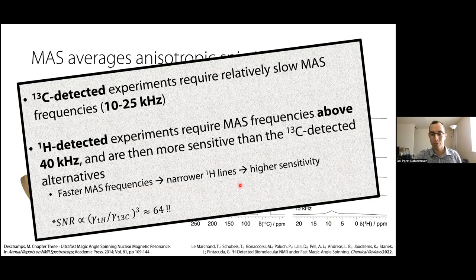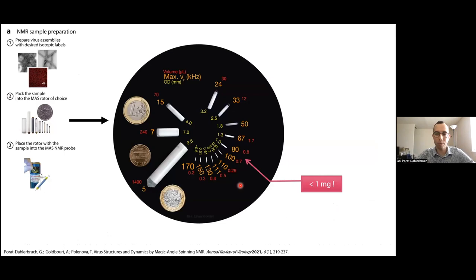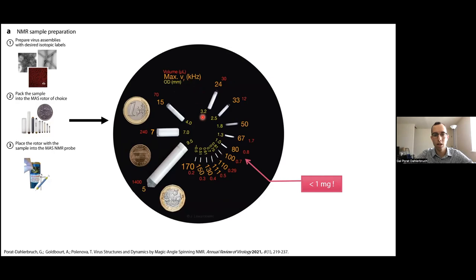Now that we understand the principle of MAS NMR spectroscopy, I want to review the process of protein structure determination by magic angle spinning NMR. The sample is prepared, isotopically labeled, and packed into an MAS rotor. MAS rotors vary in sizes, which determine the available sample volume and maximal MAS frequencies. For example, the 3.2 millimeter rotor can spin at up to 24 kilohertz, so we would mostly do carbon-detected experiments, and the sample volume is about 30 microliters.